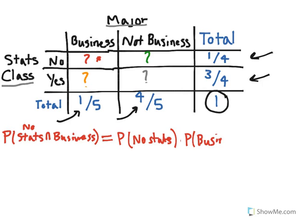That gives us 1/4 (the probability they have not taken a stats class) times 1/5 (the probability that they're a business major), which equals 1/20. You can always turn these numbers into percentages.